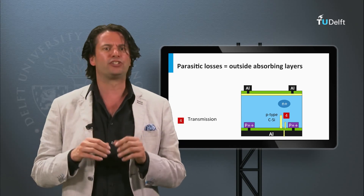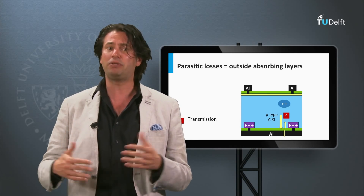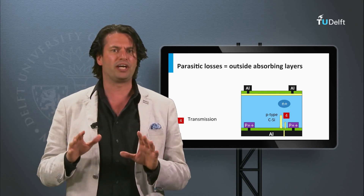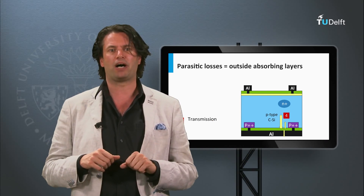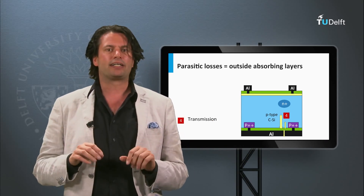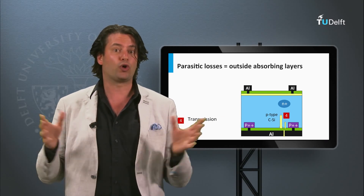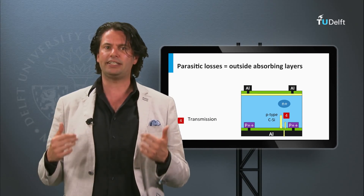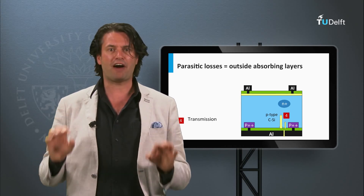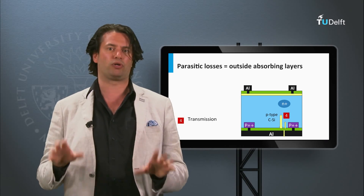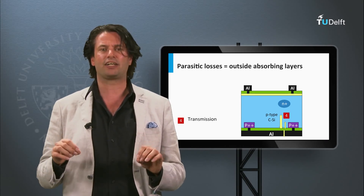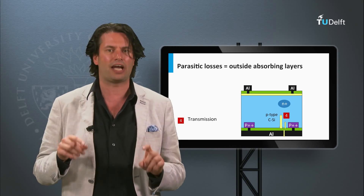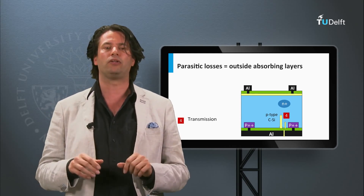Secondly, if the absorber layer is not thick enough to absorb all the light, part of the light will be transmitted. As absorption coefficients are larger in the blue spectral part, this usually plays a role in the red to infrared part of the solar spectrum. The transmitted light can be reflected back using a so-called back reflector, though some light can also be absorbed at the back contact — this can again be considered parasitic absorption. In week 5 we will discuss thin film solar cells, where back reflectors and light scattering under angles play an important role. For these solar cells you would like to scatter the light above the critical angle, which I will explain now.